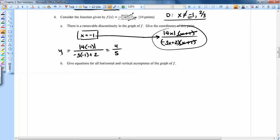So that's going to be the y value of where that hole is. So the coordinate is going to be negative 1 comma, whoops, positive 4 over 5, or 4 over 5.